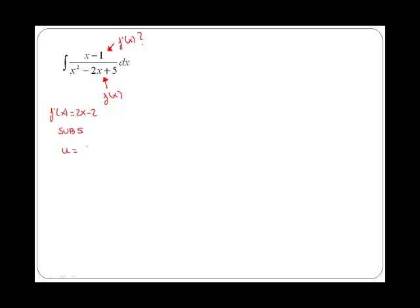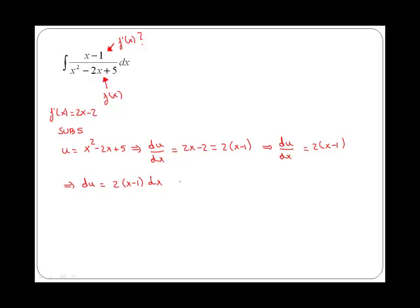We are going to call u equal to the bottom of that fraction, x squared minus 2x plus 5. If we calculate du/dx, this is 2x minus 2, which is the same as writing 2 times x minus 1. You can take 2 as a common factor, and in fact it will be easier if you do that for canceling later on. Now, if du/dx is 2 times x minus 1, we can cross-multiply, so du is equal to 2 times x minus 1 times dx. Then dividing across by 2 times x minus 1, we get that dx is equal to du over 2 times x minus 1.